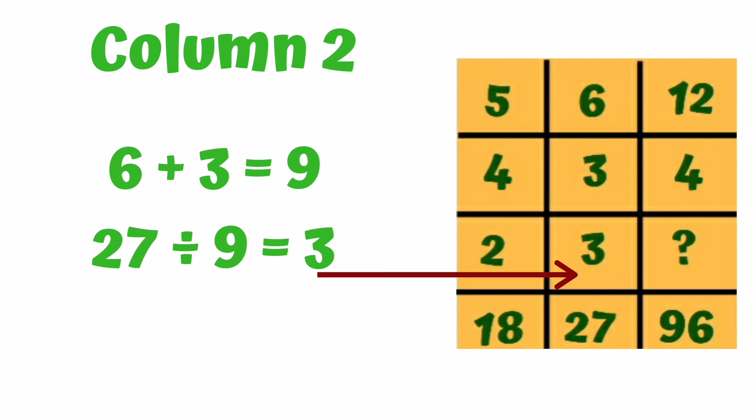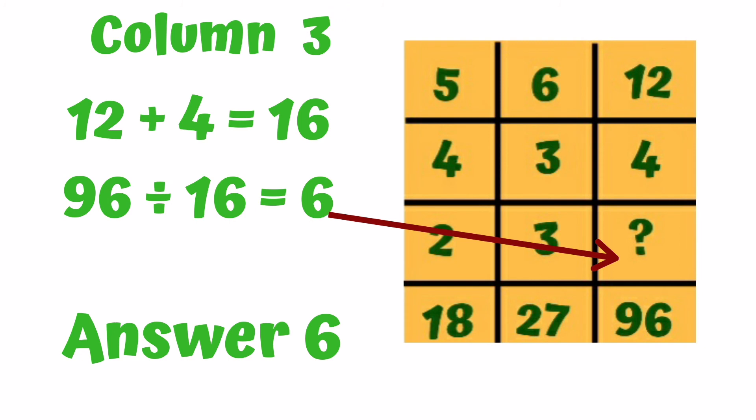So, if both columns satisfy, what will be the final solution? We will do 12 plus 4 equals 16. Then, 96 divided by 16, the answer is 6. Yes, friend, the final solution is 6.